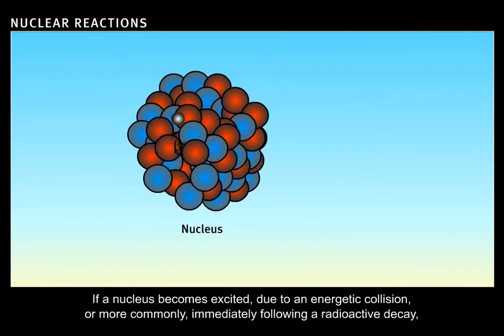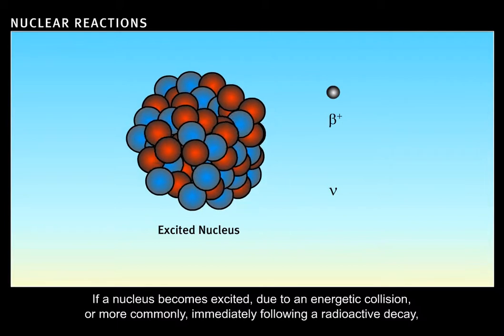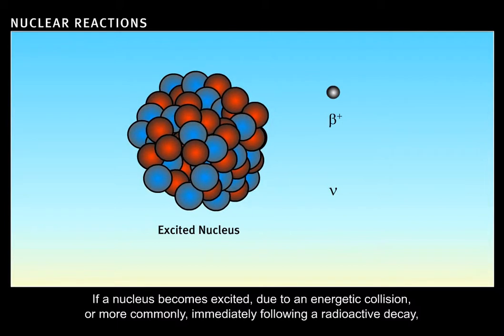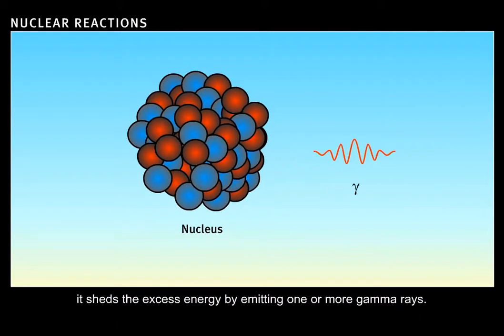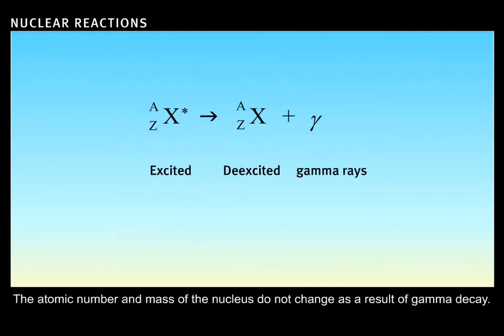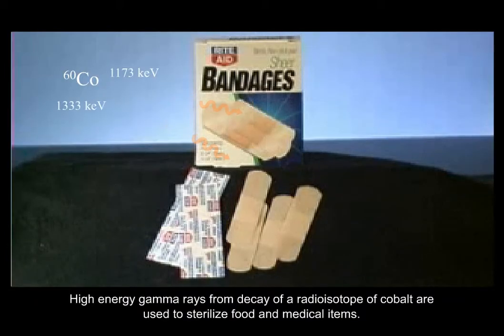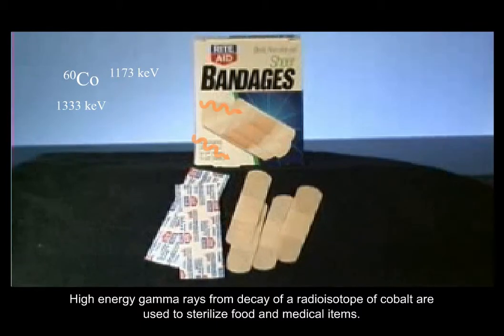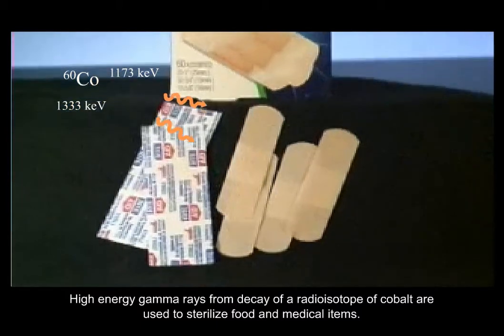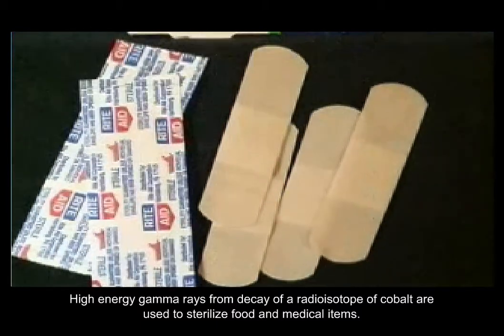If a nucleus becomes excited due to an energetic collision, or more commonly, immediately following a radioactive decay, it sheds the excess energy by emitting one or more gamma rays. The atomic number and mass of the nucleus do not change as a result of gamma decay. High-energy gamma rays from decay of a radioisotope of cobalt are used to sterilize food and medical items.